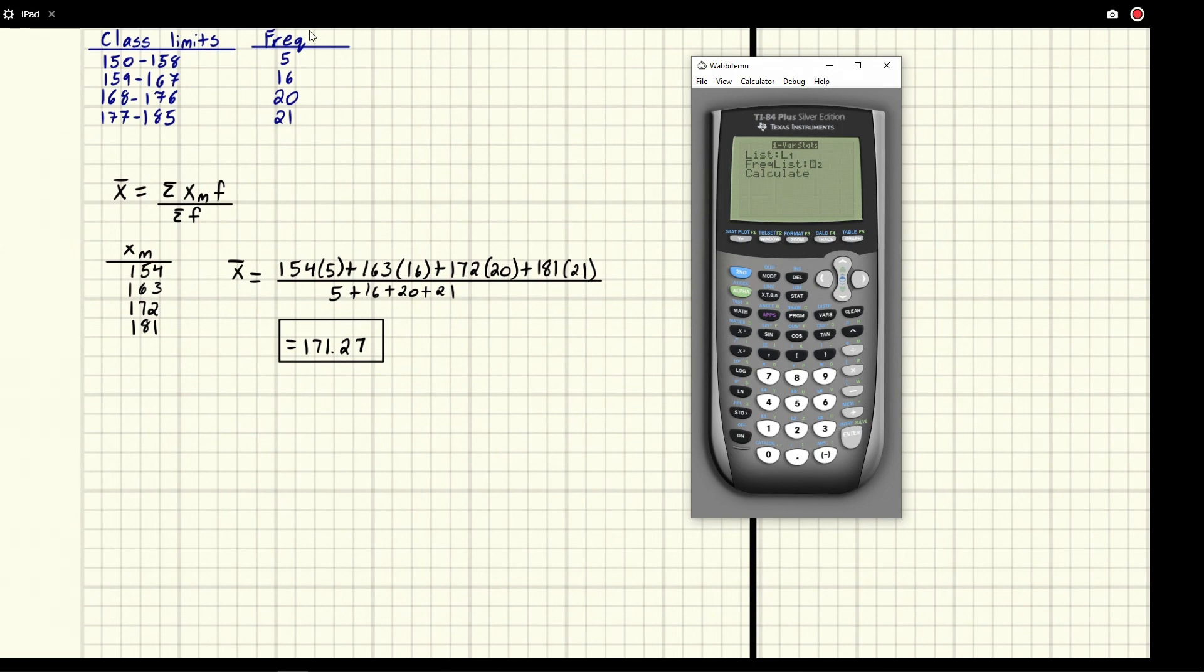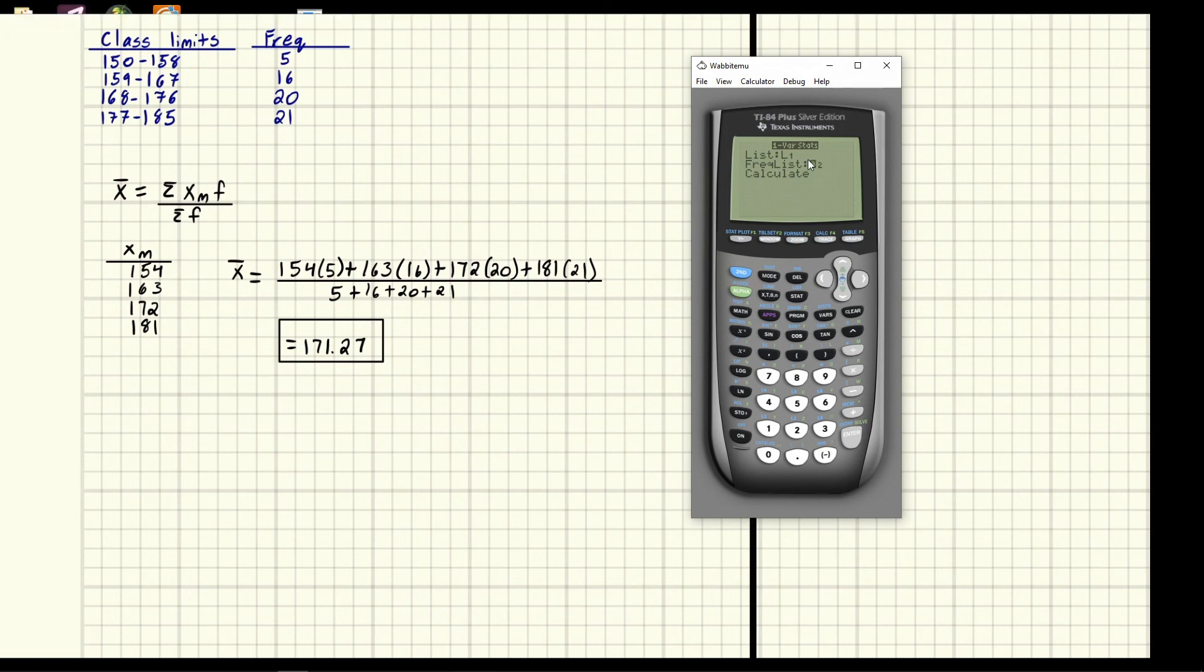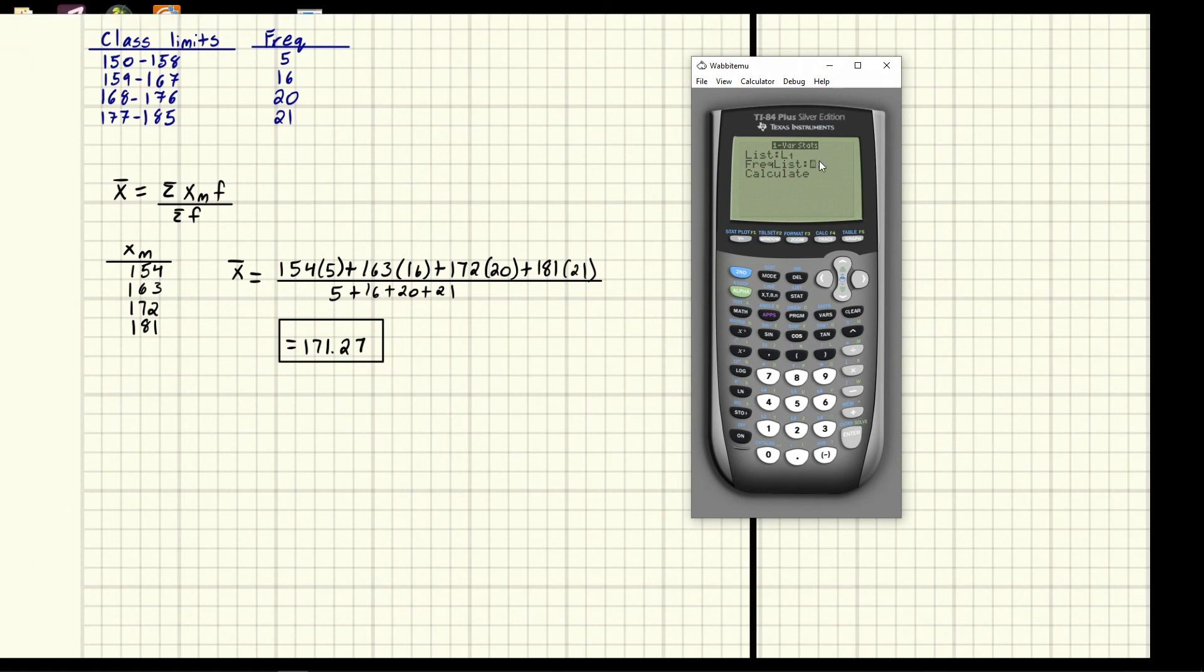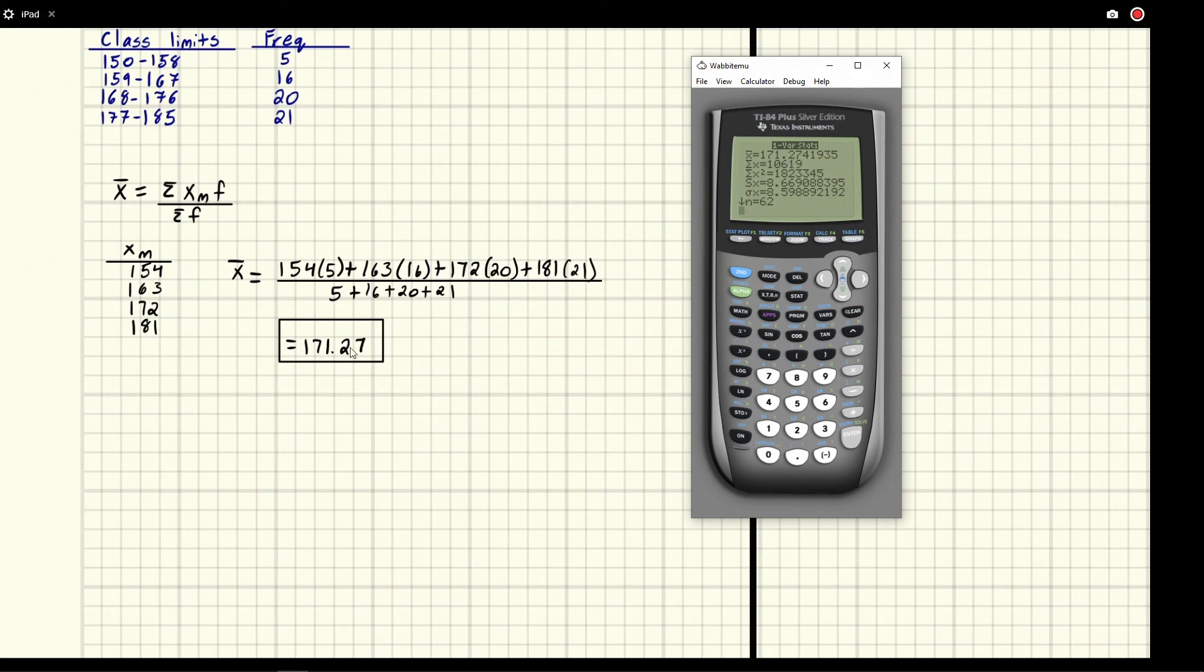Then our frequency list is going to be list two because that's where we put these. It's basically saying there are five of these, 16 of these, 20 of these. So it's doing the exact same thing this calculation is doing but it's just doing it according to these two lists instead. So now we're going to go ahead and calculate and it gives us a mean of 171.27 when you round and that is the exact same thing we got here.